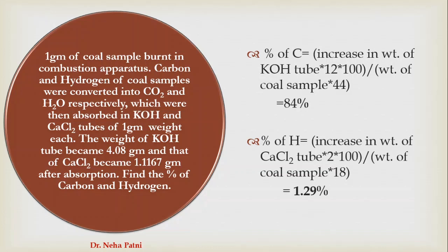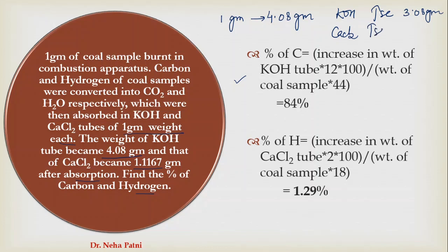For the next problem: CO₂ and H₂O are absorbed in KOH and CaCl₂ tubes, each of initial weight one gram. The weight of the KOH tube became 4.08 grams and the CaCl₂ tube became 1.11 grams after absorption. Find the percentage of carbon and hydrogen. The increase in weight of KOH is 4.08 − 1 = 3.08 grams. Similarly calculate the increase for calcium chloride — it is 0.11 grams. Use the same formula with these increase values to solve the numerical.